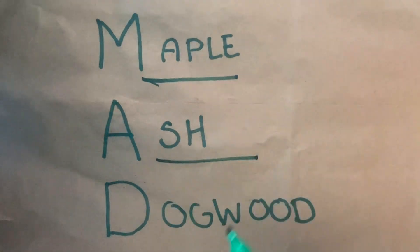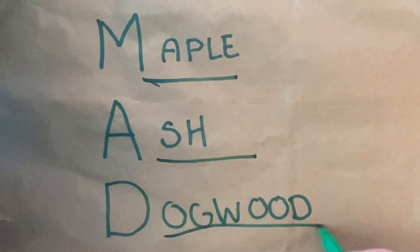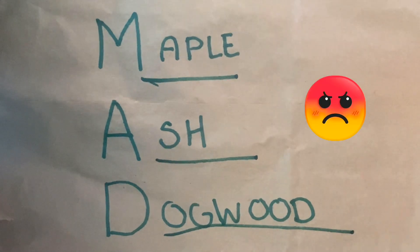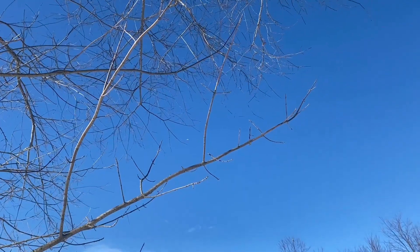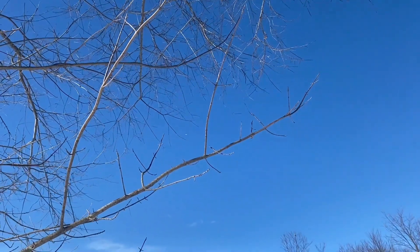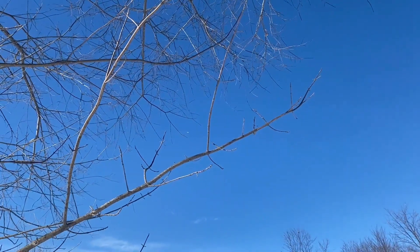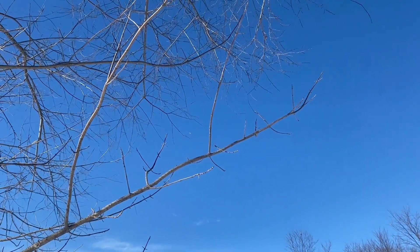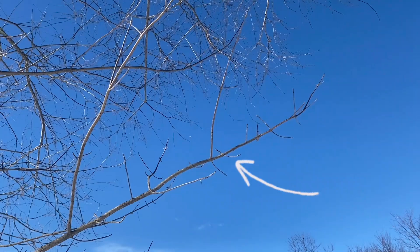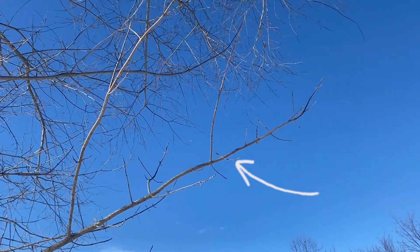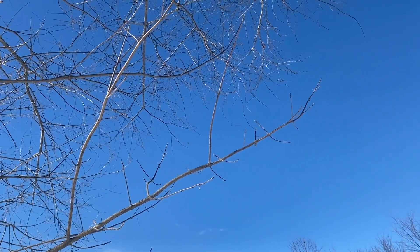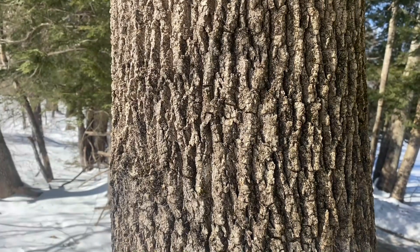We can remember them using the mnemonic device MAD. When we take a look at this tree, we can see that the twigs mirror each other in perfect pairs, so we can already guess that this is a maple, ash, or dogwood.